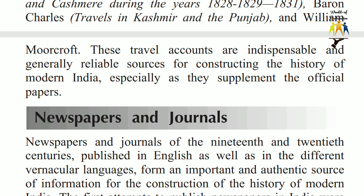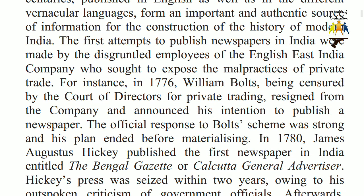Newspapers and Journals. Newspapers and journals of the 19th and 20th centuries, published in English as well as in different vernacular languages, form an important and authentic source of information for the construction of the history of modern India. The first attempts to publish newspapers in India were made by the disgruntled employees of the English East India Company who sought to expose the malpractices of private trade. For instance, in 1776, William Bolts, being censured by the Court of Directors for private trading, resigned from the company and announced his intention to publish a newspaper. The official response to Bolts's scheme was strong and his plan ended before materializing.